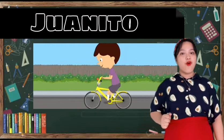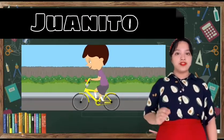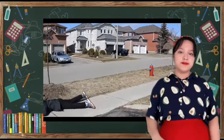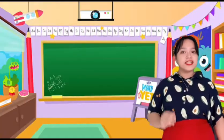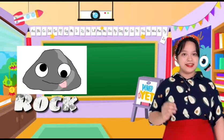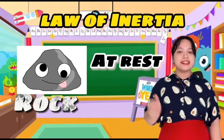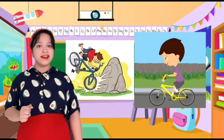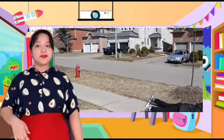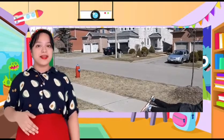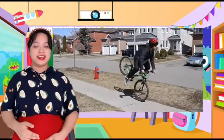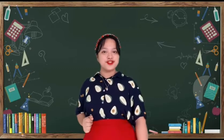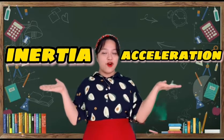This is Juanito. Juanito is enjoying biking every morning. While he was enjoying biking, he did not know that there was a rock on the street, and eventually he flipped from his bike. What do you think is the energy the rock possesses? It represents the law of inertia. What does the bike and Juanito possess when they flip from the rock? When Juanito tries to pull the brake, the acceleration begins, and that causes him to flip from his bike. The law of motion stated here is the law of acceleration. Juanito just shows the first and second law of motion, which is the law of inertia and the law of acceleration.